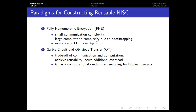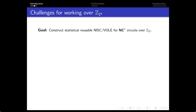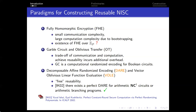A garbled circuit is essentially a computational randomized encoding for Boolean circuits. The result of this is inherently computational security in the hybrid model. When we contain arithmetic circuits, transferring arithmetic circuits to Boolean circuits incurs additional overhead. So we focus on the paradigm of data and vole, where data and vole can be viewed as arithmetic analogs of garbled circuits and oblivious transfer, respectively.